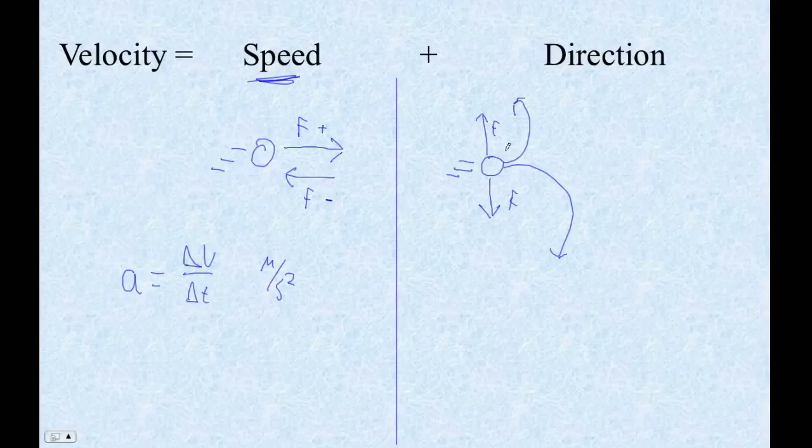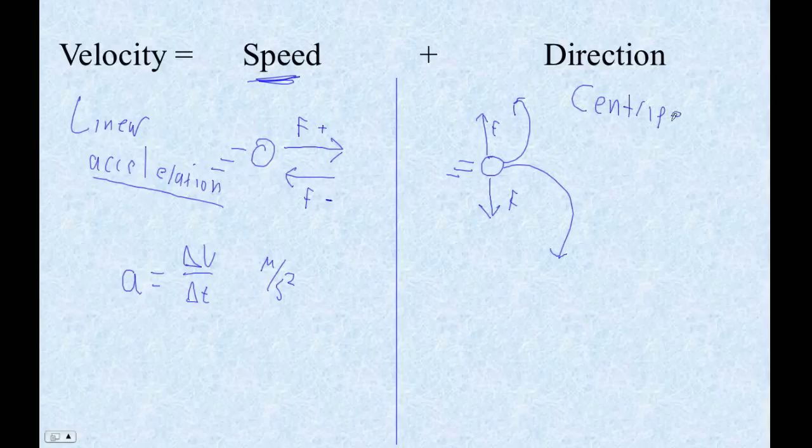Now in the past, what we did was we had the speed change, but the direction did not change. This was linear acceleration. We didn't call it linear acceleration because we didn't know there was any other kind. Now we're going to talk about an acceleration where the speed doesn't change, but the direction does change. This type of acceleration is called a centripetal acceleration, and centripetal acceleration just means toward the center.